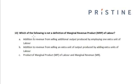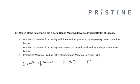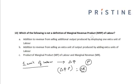Which of the following is not a definition of the marginal revenue product of labor? The marginal revenue product of labor as input is the addition to the revenue from selling additional output produced by employing one extra unit of labor. So if I add one unit of labor, the extra amount produced is ΔQ, and if P is the market price, then ΔQ × P is the change in revenue — that is the marginal revenue product.